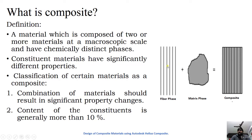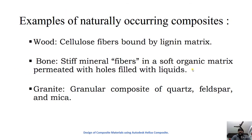Some examples of naturally occurring composites are wood, where cellulose fibers are embedded inside a lignin matrix, and bone, where stiff mineral fibers are present inside a soft organic matrix.